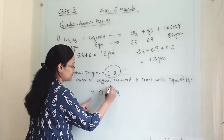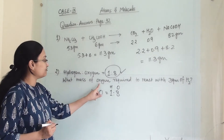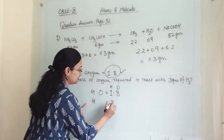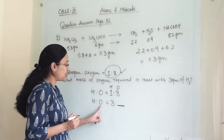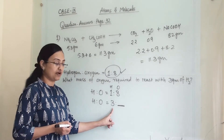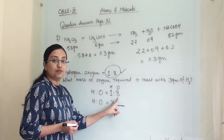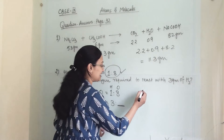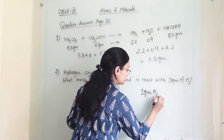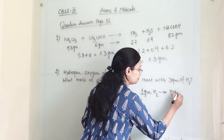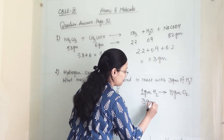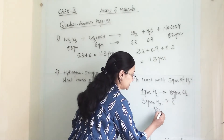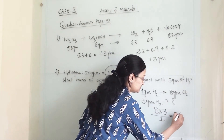Here, hydrogen is 1 part and oxygen is 8 parts. The question asks what mass of oxygen is required to react with 3 gram of hydrogen. We can calculate: 1 gram of hydrogen reacts with 8 gram of oxygen. So if we have 3 gram of hydrogen, the amount of oxygen required is 8 multiplied by 3 divided by 1, which gives us 24 gram.